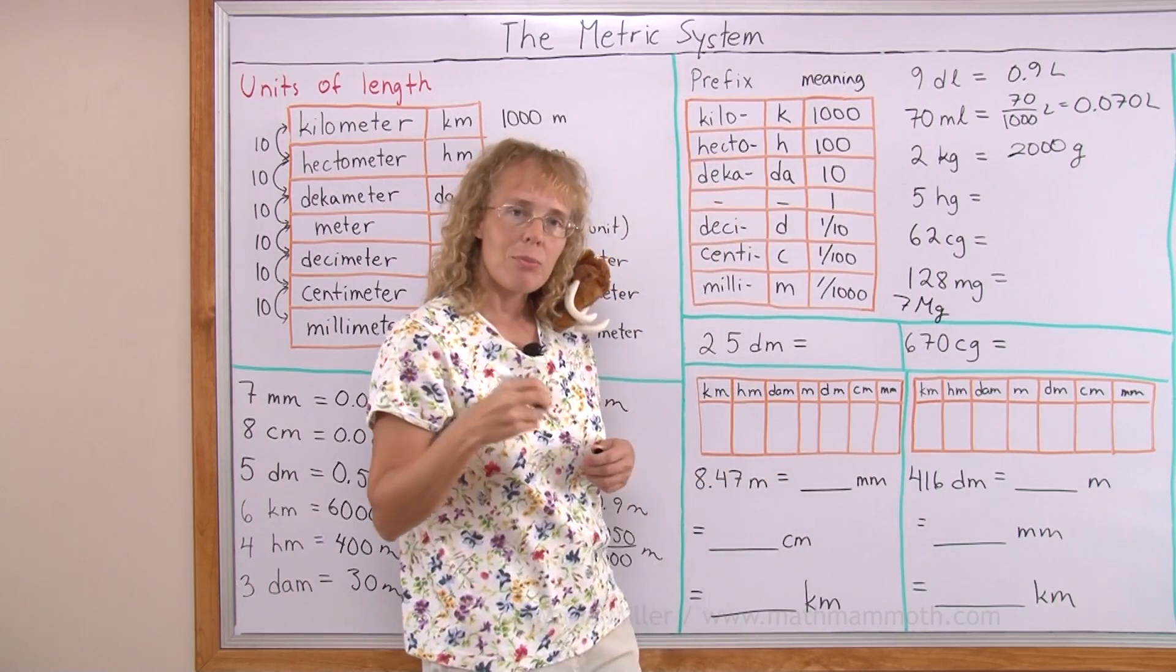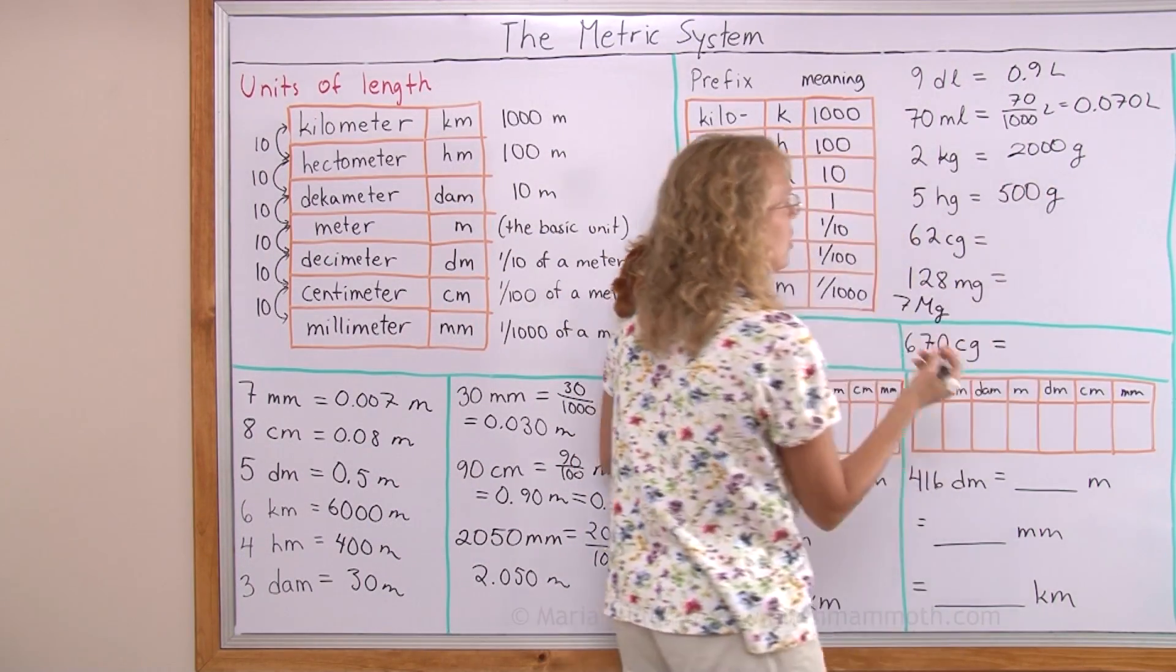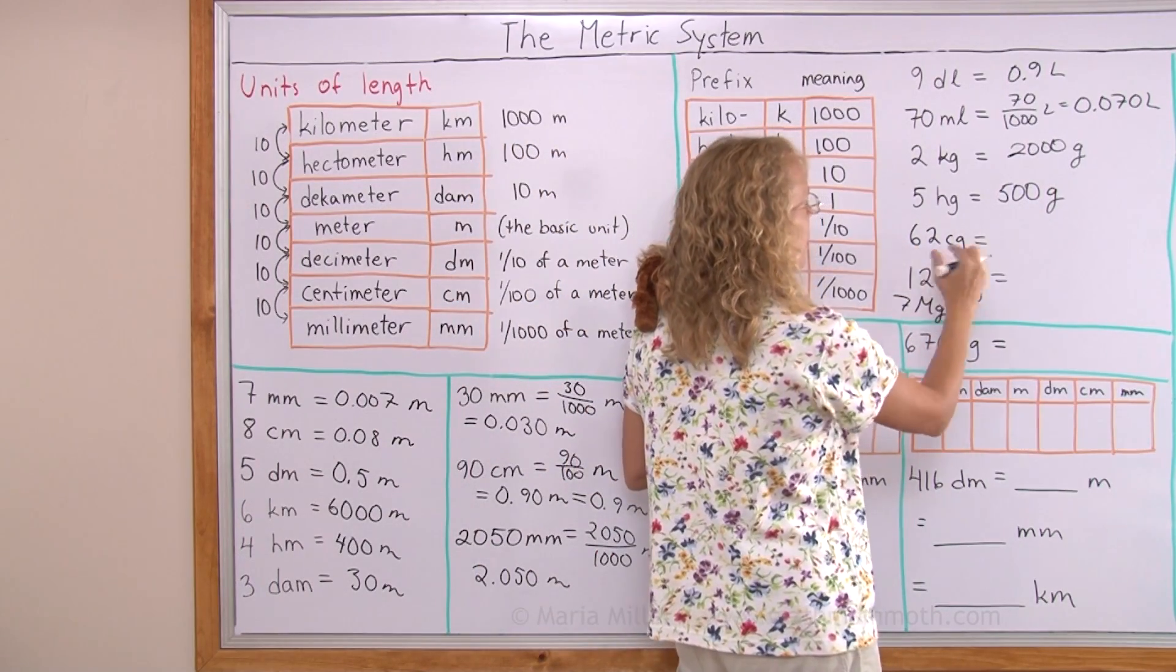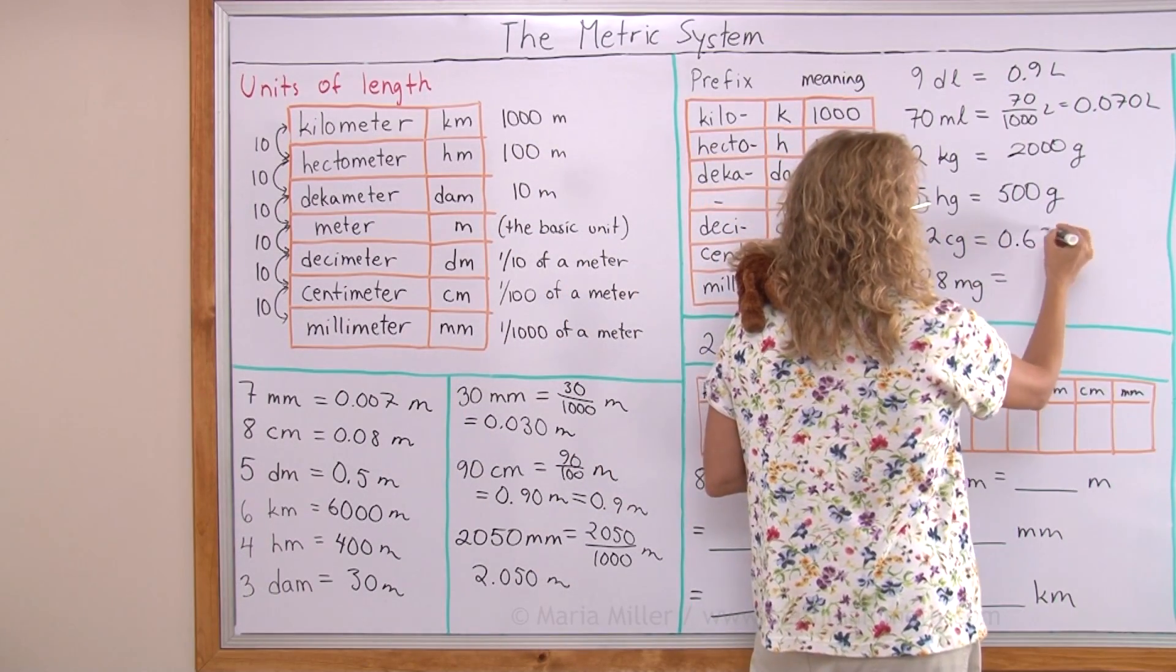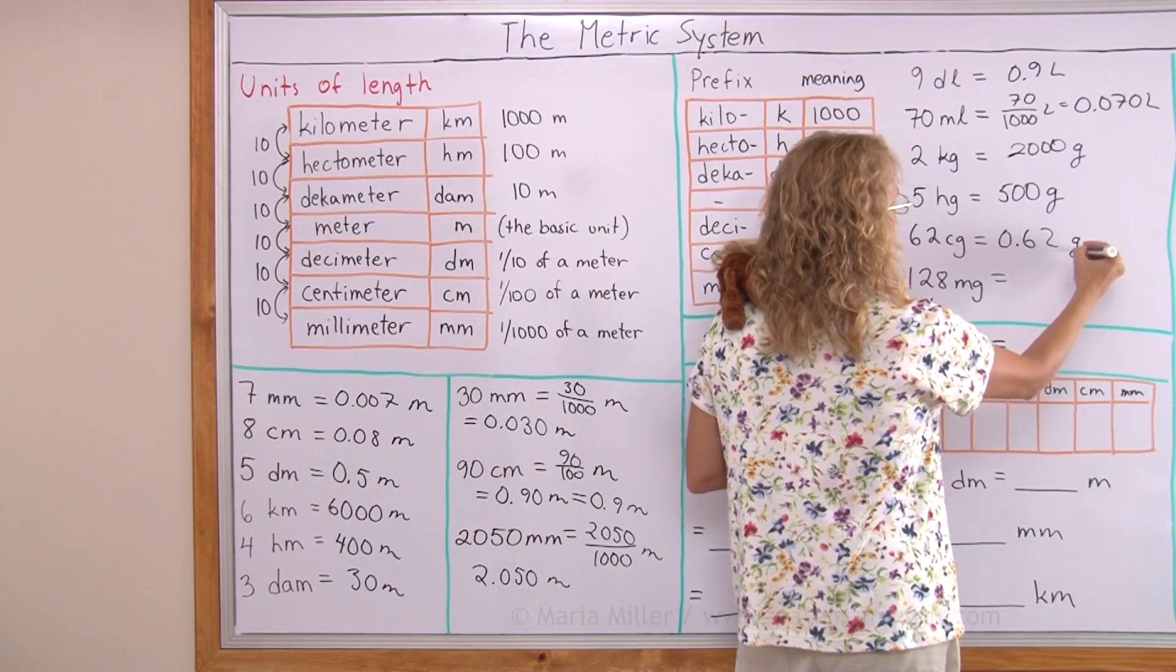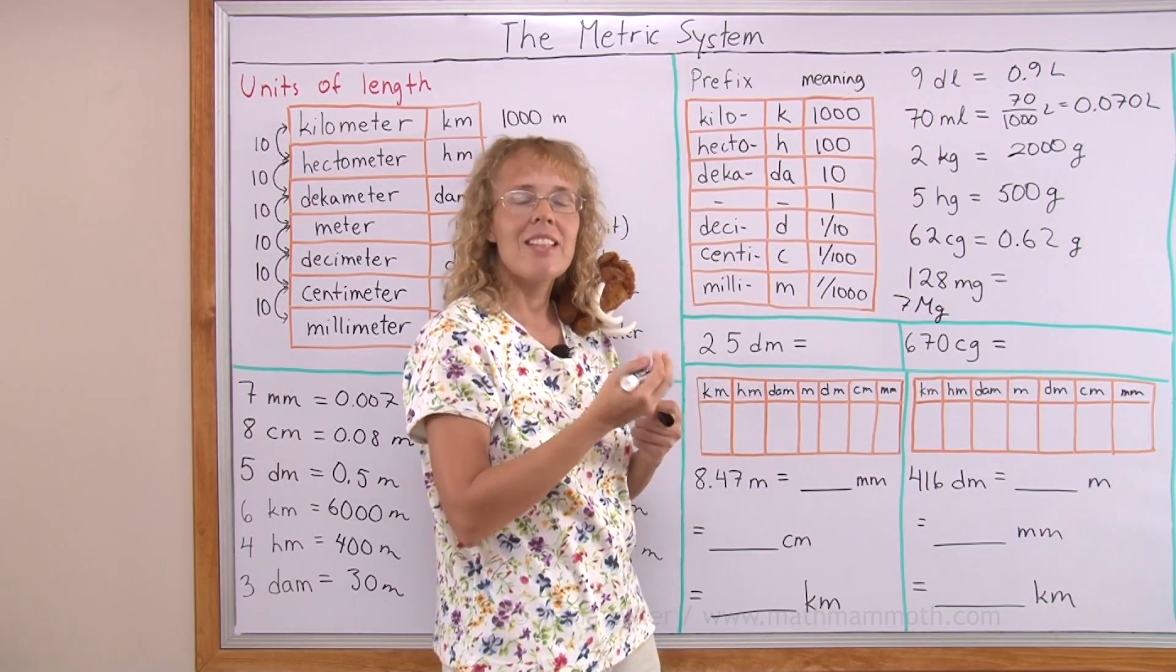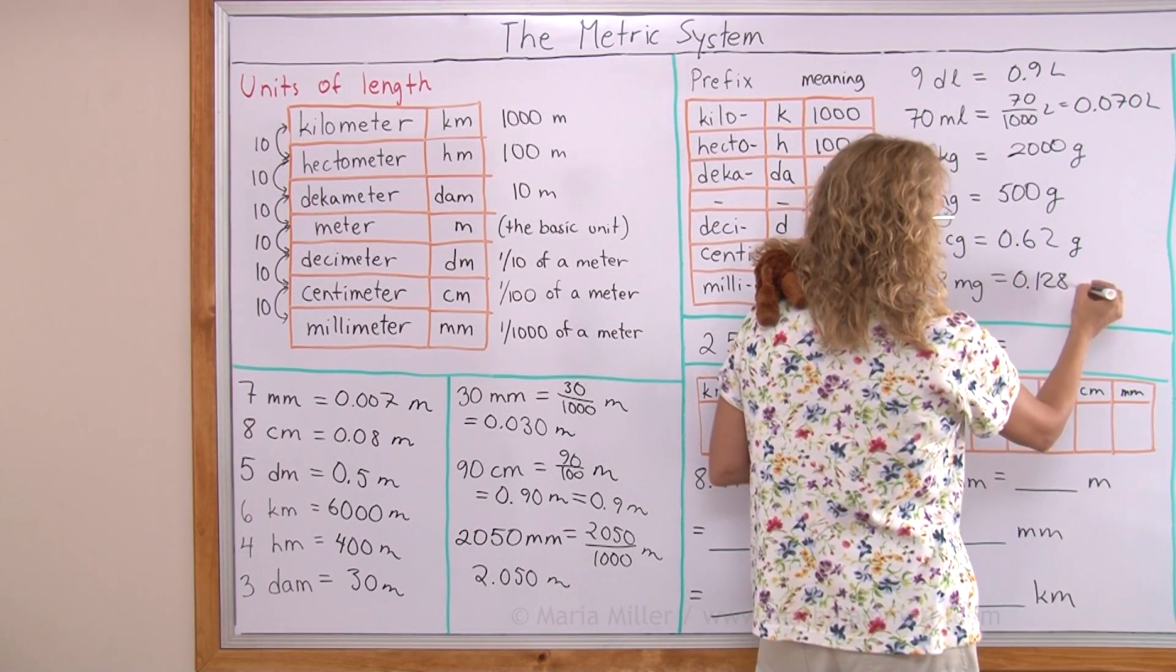Five hectograms. Hecto meaning hundred. So five hundred grams. I'm just changing these towards the basic unit here. Each one of these. Sixty-two centigrams. Sixty-two hundredths of a gram. So this is 0.62 grams. And then one hundred twenty-eight milligrams. One hundred and twenty-eight thousandths of a gram: 0.128 grams.